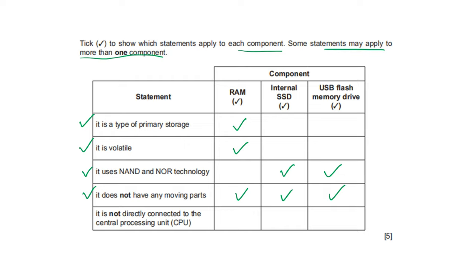Next: it is not directly connected to the central processing unit — RAM is directly connected to the CPU, so SSD and USB flash memory drive are the correct answers here.